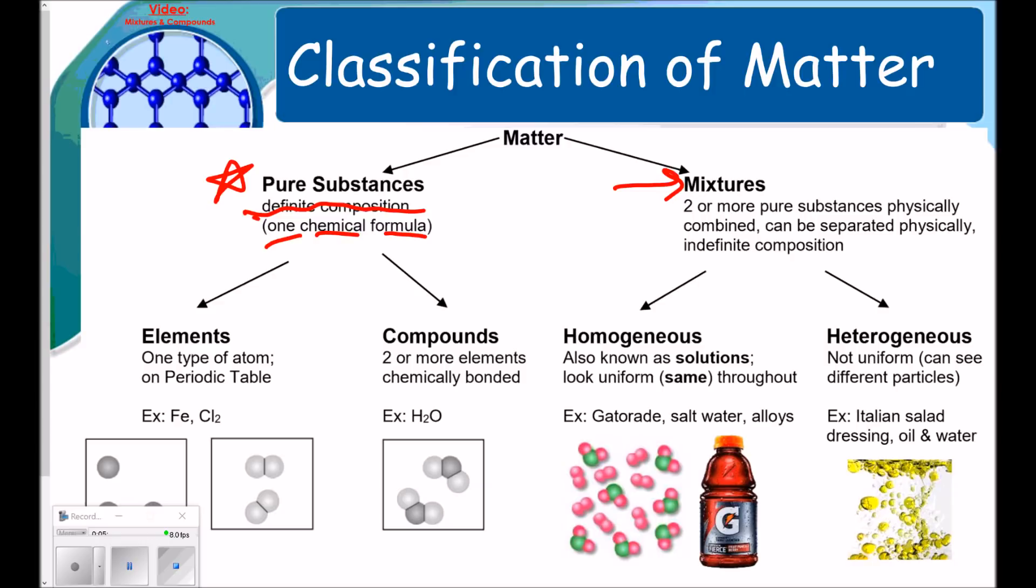So things like elements and compounds. Elements are one type of atom that you find on the periodic table. For example, iron or chlorine. Iron would look like this. It's just one type of atom. But chlorine also is one type of atom, but it's special in the fact that it's diatomic.